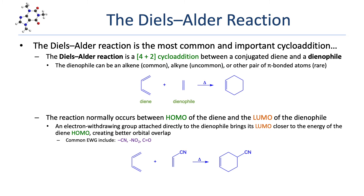For the rest of this lesson, we'll be focusing on the most important cycloaddition: the Diels-Alder reaction. The Diels-Alder reaction is a [4+2] cycloaddition between a conjugated diene and a dienophile, which is usually an alkene but can also be an alkyne or some other pair of pi-bonded atoms. The reaction normally occurs between the HOMO of the diene and the LUMO of the dienophile. A good Diels-Alder reaction will typically have an electron-withdrawing group attached to the dienophile. This lowers the energy of the dienophile's LUMO, bringing it closer to the energy of the diene HOMO, which leads to better orbital overlap. Common electron-withdrawing groups include nitriles, nitro groups, and carbonyls.